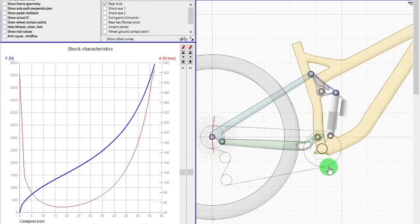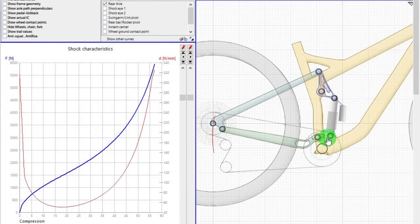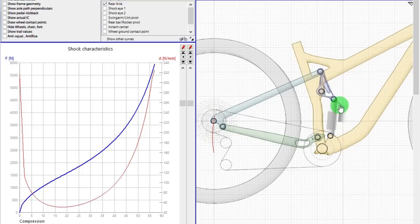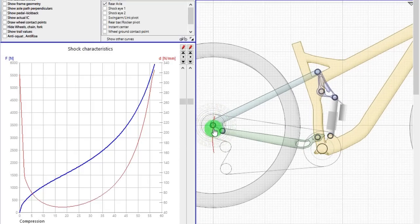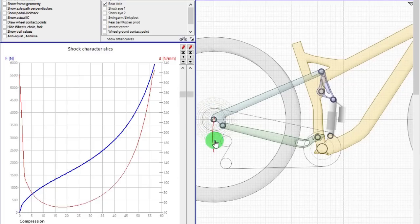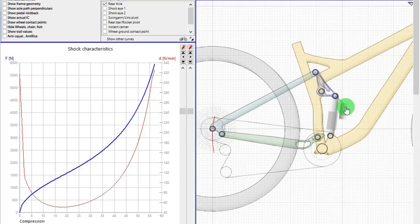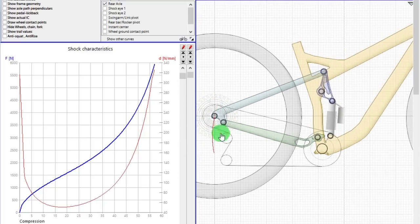The last graphs were the leverage ratio. The leverage ratio does not depend on the kind of shock. However, if you analyze the forces needed to compress the rear suspension, the kind of shock you use will affect the end results.